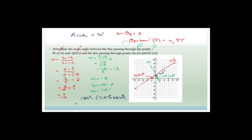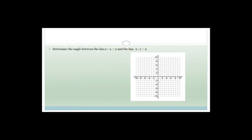So that wasn't too difficult. Usually when asked to find the angle between two lines, we find their angles with respect to the x-axis and then work out a triangle. Now we've got another example: determine the angle between the line y plus x equals 3 and the line x plus y equals 2. I'm going to go through it again — you'll see why.